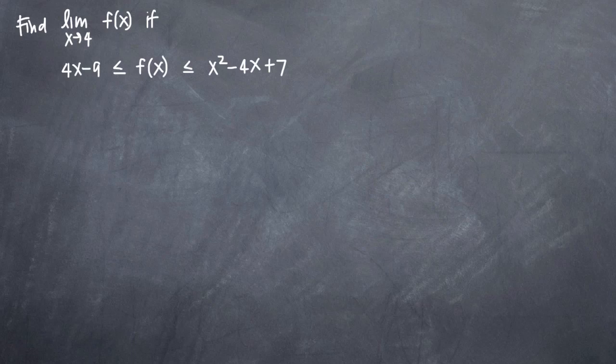In this particular problem, we've been asked to find the limit as x approaches 4 of f(x) if the following inequality is true, where f(x) is greater than or equal to 4x minus 9 and less than or equal to x squared minus 4x plus 7.